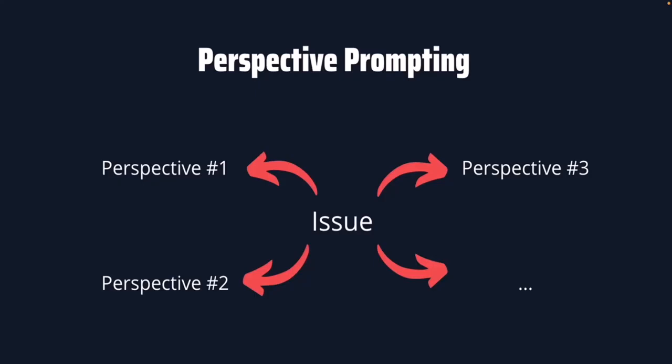The perspective prompting technique is similar to role prompting, but here we use different perspectives to solve an issue. We have a problem we want ChatGPT to solve, and we give it different perspectives to get different solutions, then find the best one ourselves. It can be one, two, or more perspectives — the more perspectives we provide, the more chances we have to find the best solution.